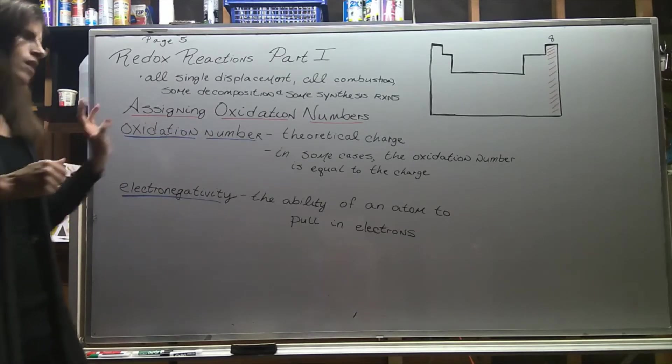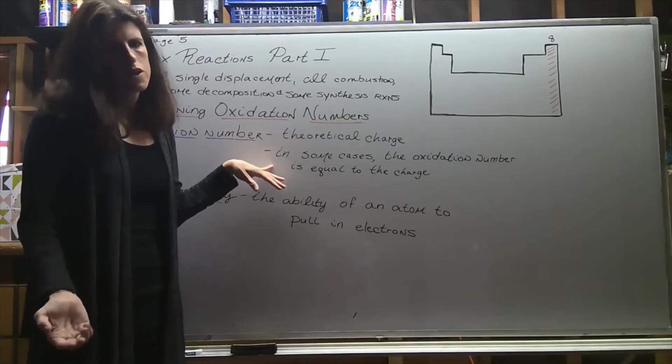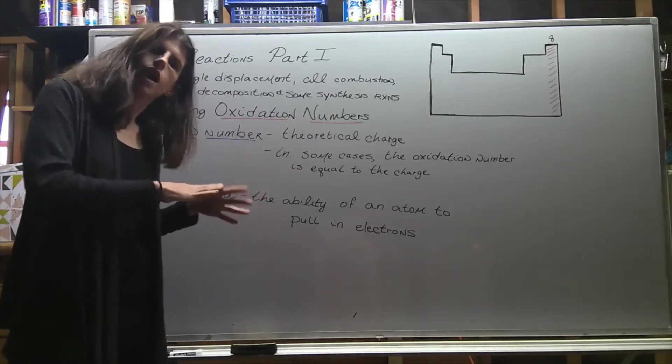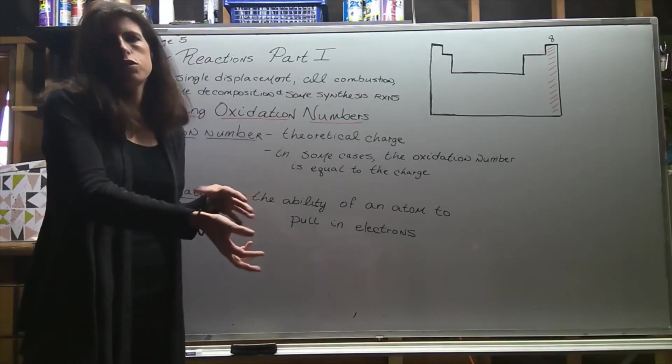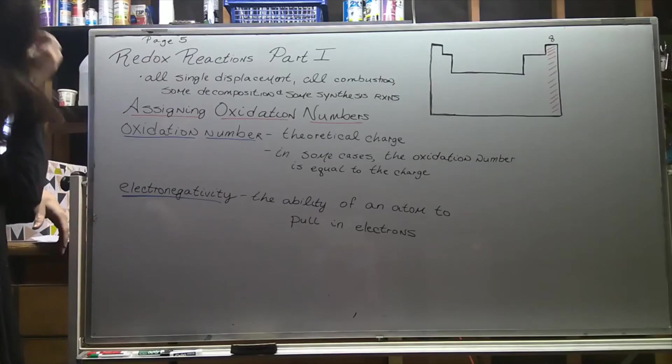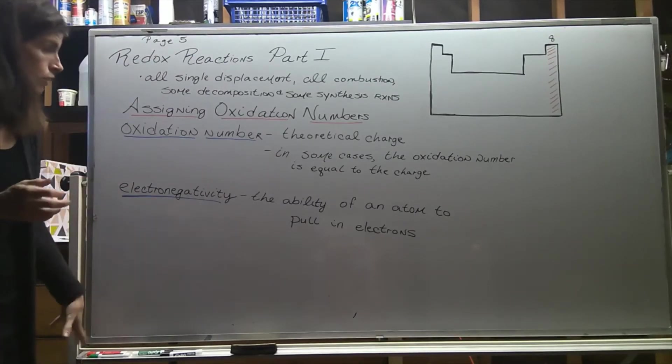We can also assign oxidation numbers to ionic compounds. In that case, we'll see when we practice this, the oxidation number is equal to the charge on the ion. How do we do this? We want to understand the definition of electronegativity.